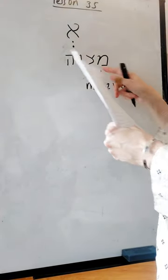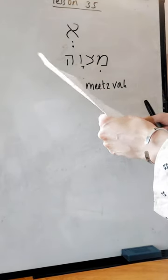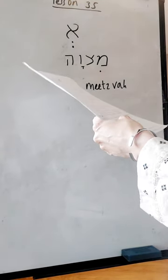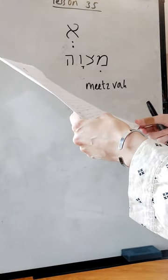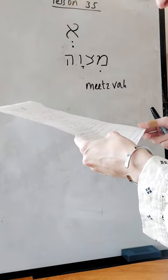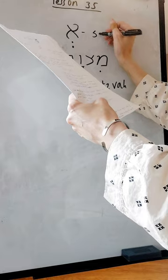But in Hebrew you never leave a consonant empty without a vowel except for the last letter in a word. So what do we do when the consonant doesn't have a vowel, as in the word window in English, the N doesn't have a vowel?